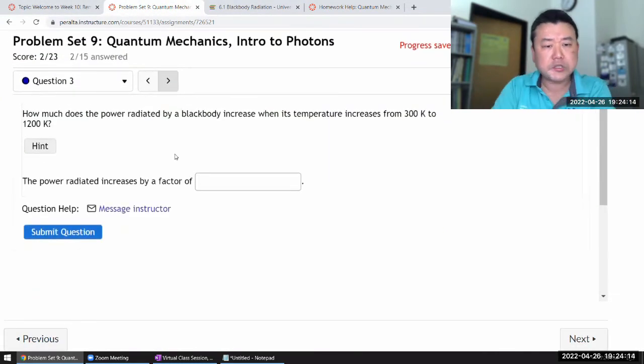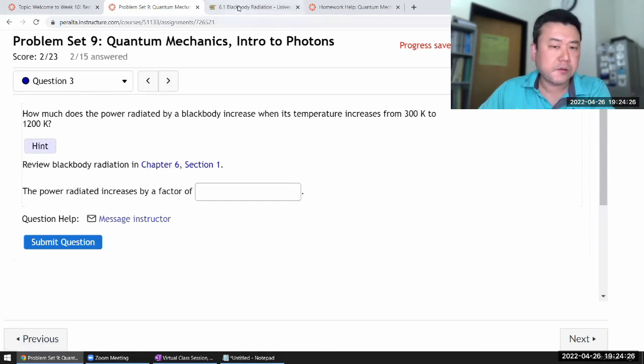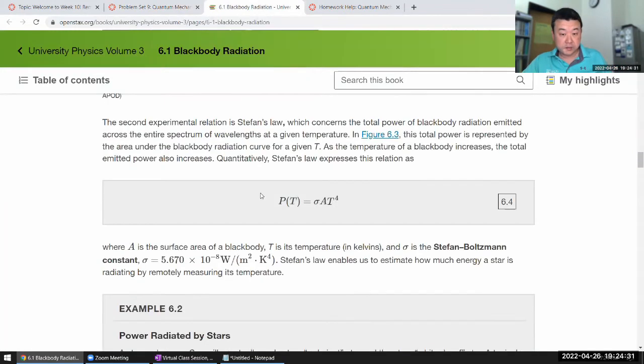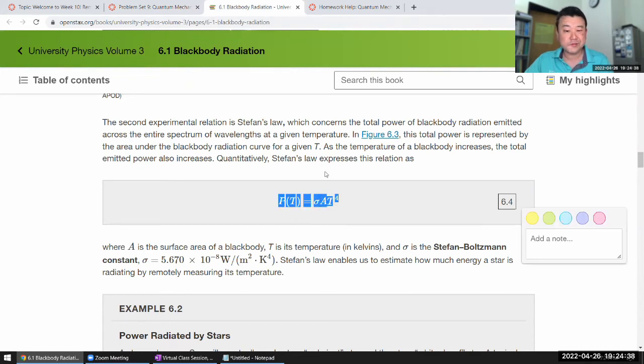So it's asking, how much does the power radiated by a black body increase when its temperature increases from 300 to 1200 Kelvin? Yeah. So in the hint, it'll again point you to here. And what you mainly need is the Stefan Boltzmann law, which tells you the dependence of the power emitted on the temperatures. This is a constant that you basically have to look up. And A, that's just the area because we're talking about power. If you're talking about intensity, then you don't need the area because it's the power per area.